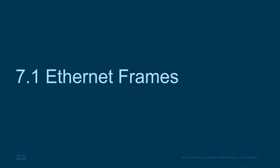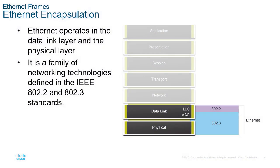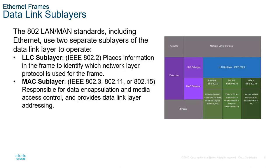Ethernet frames happen at Layer 2. They take a packet from Layer 3 and convert it into a data frame depending on which technology Layer 2 is using. This chapter is all about Ethernet as the underlying technology. Ethernet actually operates at both Layer 1 and Layer 2. The data link layer is broken up into two subcategories: LLC and MAC. It uses IEEE code 802.2 for the LLC and 802.3 for the MAC sublayer.